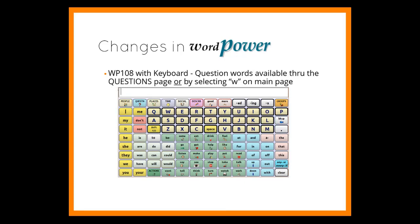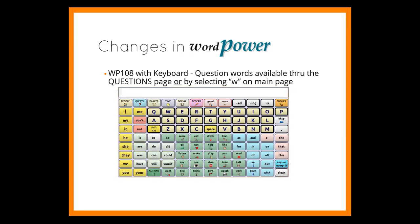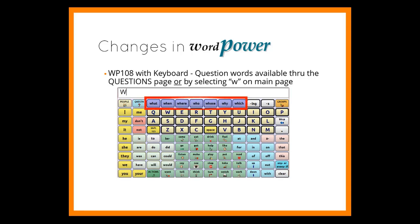WordPower 108 with keyboard is updated to provide access to question words through the question button or by selecting W on the main keyboard page. Select the questions category and this page opens. Select W on the keyboard and the question words will appear in the top row.